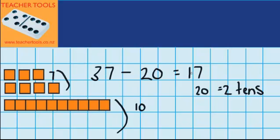So 37 minus 20 equals 17. Now notice how we had these 7 ones and our answer, we've still got 7 ones. That hasn't changed.